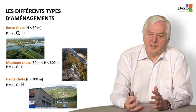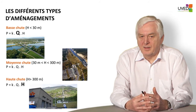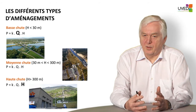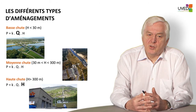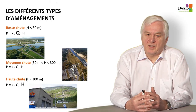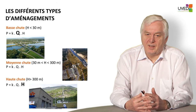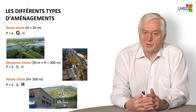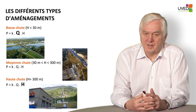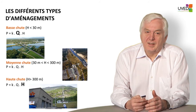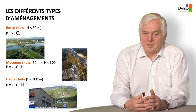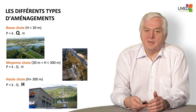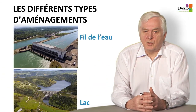Next, we have intermediate-head power plants when the head is between 30 and 300 meters. In order to achieve the same power, there are average flow and head values. High-head power plants are built when the head is in excess of 300 meters. Here we have a power plant in the Pyrenean mountains with almost 1,200 meters of head. You can see the penstock pipe coming from the top of the mountain right into the power plant. It is important to know these categories because the equipment differs enormously between the different types of heads.